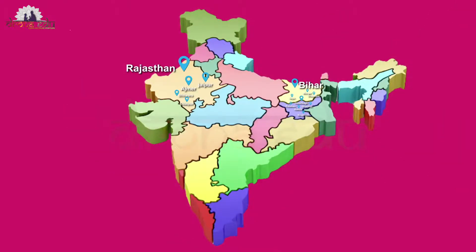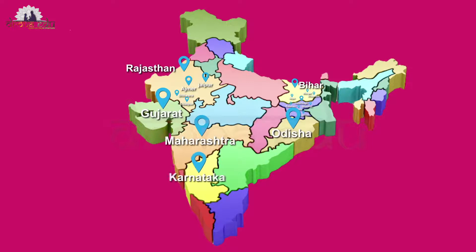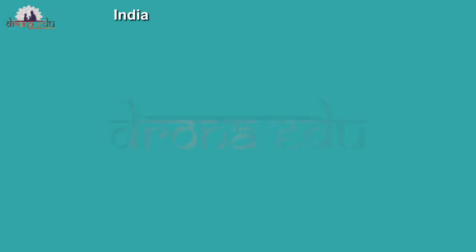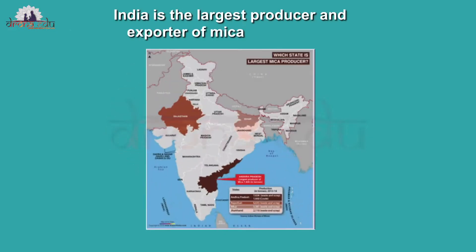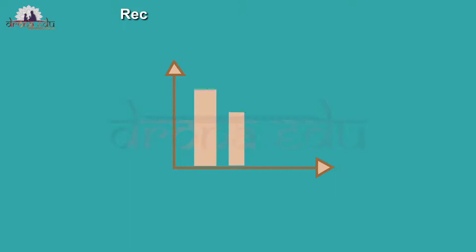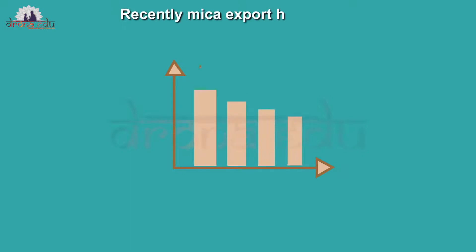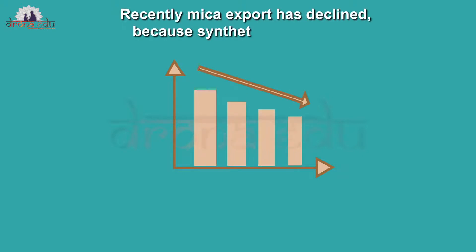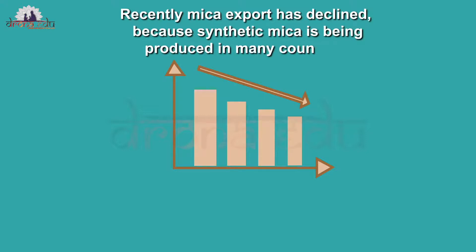Small deposits of mica are found in Gujarat, Maharashtra, Odisha, Karnataka, Tamil Nadu and Chhattisgarh. India is the largest producer and exporter of mica in the whole world. Recently, mica export has declined because synthetic mica is being produced in many countries.